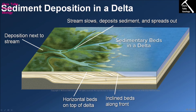Beneath the horizontal upper beds we find beds with an inclined surface, sometimes described as having a lozenge-like shape — narrow at one end, broadening out, then narrowing again at the other end. These sets of beds represent material being dropped down the front edge of the delta. As river water hits the main mass of the ocean, sea, or lake it decelerates very rapidly, causing sediment to be dumped at the edge of the delta. Over time that sediment slides down the front of the delta, creating the inclined bedding.